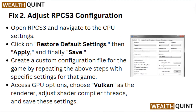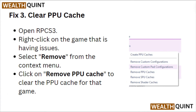Fix 2: Adjust RPCS3 configurations. Open RPCS3 and navigate to CPU settings. Click on Restore Default Settings, then apply and save. Create a custom configuration file for the game by repeating the above steps with specific settings for that game. Access GPU options, choose Vulkan as the renderer, adjust shader compiler threads, and save these settings.